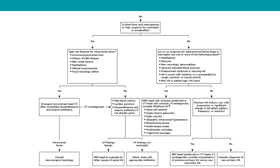If there is fever and suspicion of meningitis or encephalitis, identify high-risk features for intracranial lesion including: immunocompromised status, history of CNS disease, new onset seizures, papilledema, altered consciousness, and focal neurological deficit. If present, perform emergency CT head; if a lesion is found, refer to neurology and neurosurgery. If not found but encephalitis is suspected, perform stat blood cultures, give antibiotics, perform lumbar puncture, and consider dexamethasone. If LP findings are benign, further neuroimaging such as MRI head may be warranted. If LP is consistent with meningitis, treat accordingly.